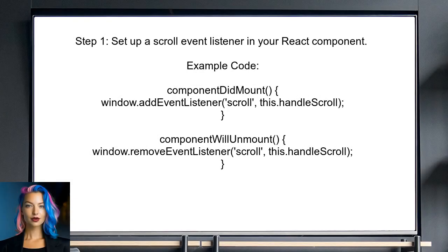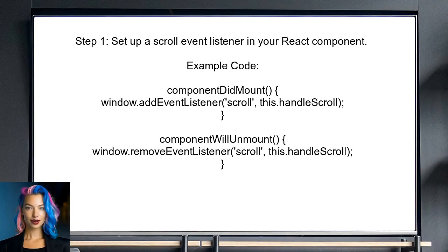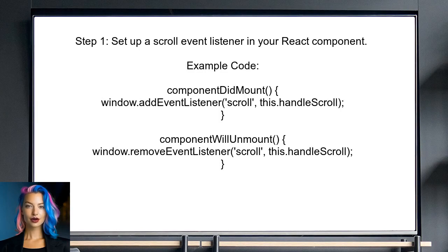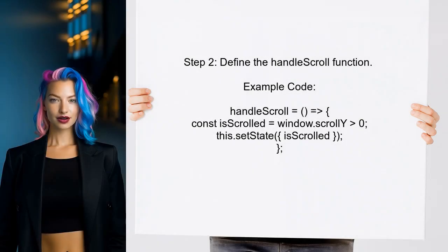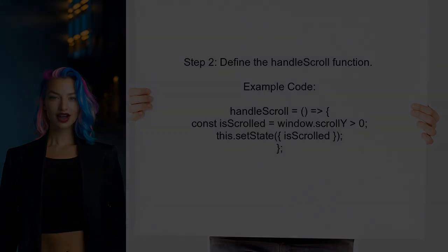To begin, the user needs to set up a scroll event listener in their React component. This will allow us to detect when the user scrolls the page. Next, the user should define the handleScroll function, which will check the scroll position and update the component's state accordingly.